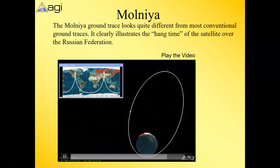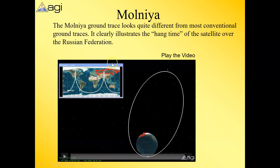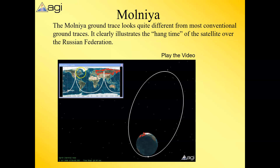Notice that while the Molniya orbit hangs over Russia — good for Russian communications — it also hangs over North America. That's useful for gathering signal intelligence, even if photographic intelligence isn't practical from that altitude.